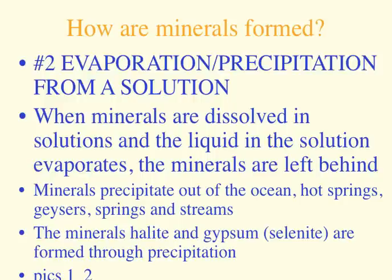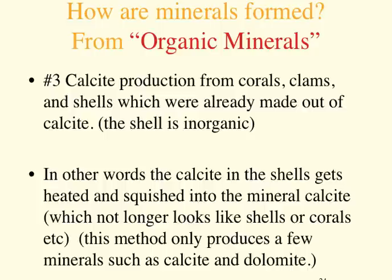Most of our minerals precipitate out of the oceans or other areas like hot springs, geysers, and streams. Very common minerals like halite, which is in your sheetrock and in the walls of most of our houses, and gypsum are formed that way, as well as salt, which is a precipitate or an evaporation.